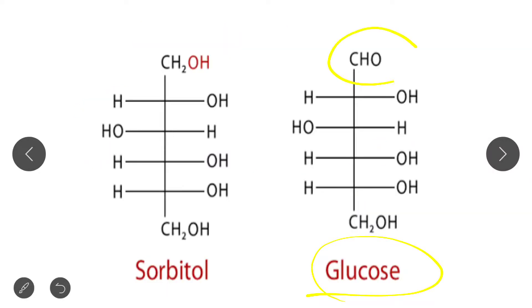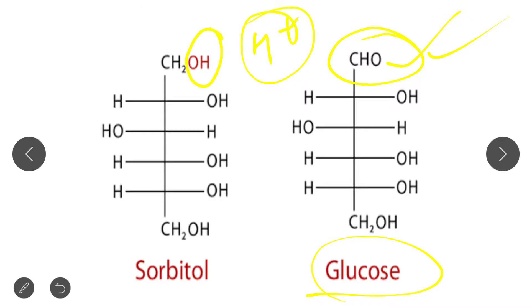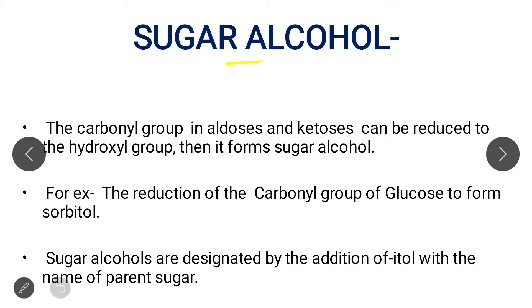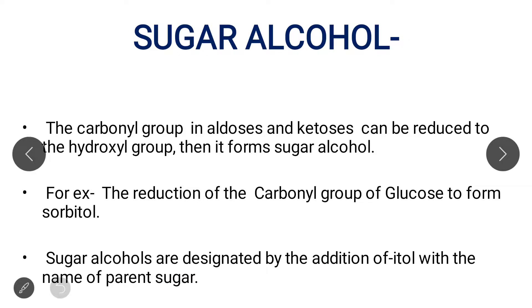When the carbonyl group in an aldose or ketose is reduced to a hydroxyl group, it forms a sugar alcohol. For example, glucose forms sorbitol — the aldehyde group (CHO) becomes CH₂OH when H⁺ is added. All sugar alcohols are designated by the addition of '-itol' to the name — for example, sorbitol from glucose, and xylitol from xylose. This is the third derivative of monosaccharide.